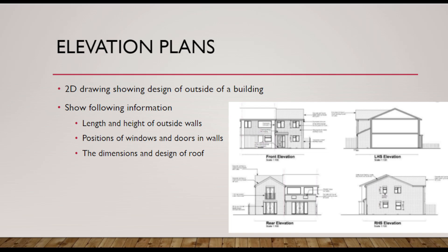Elevation plans are also 2D drawings showing the design of the outside of the building. We don't see anything inside — this is completely the outside view. We can see the length and height of the outside walls, the position of the windows, where the garage is, the front door, and the dimensions and height of the roof. Those are all the things your elevation plan will show you.